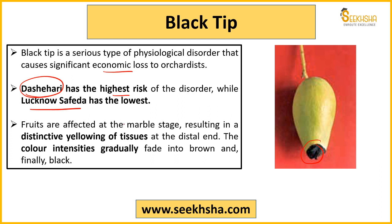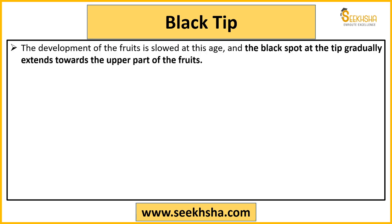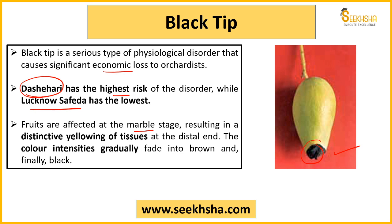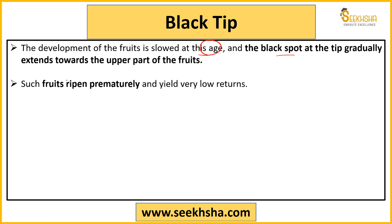Fruit ke upar effect black tip ka marble stage ke upar hi aapko dekhne ko mil jata hai. Shuruaat mein kya hoga? Aapka jo tissues hain wo yellow hone shuru ho jayenge — is tariqe se end ke upar mango fruit ke. Aur dhire dhire woh color intensify hota jayega, aur ultimately pehle yellow se black, brown, aur phir brown se finally black is tariqe se aapka mango aapko dikhega. Agar ham black tip ki baat karein, to ultimately agar black tip aapke fruit ko effect kar raha hai to usse kya hoga? Aapke fruit ki development bhi slow ho jayegi. Aur dhire dhire yeh black tip jo hai, yeh black spot hai, yeh bharna shuru ho jayega, extend hona shuru ho jayega — jaisi abhi toh sirf yahan par end par hai na, dhire dhire yeh aage ki taraf bharata jayega, sardeta jayega.